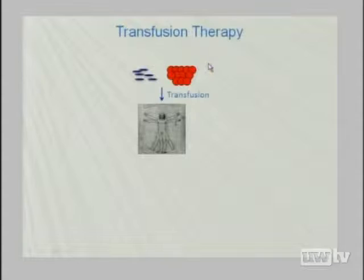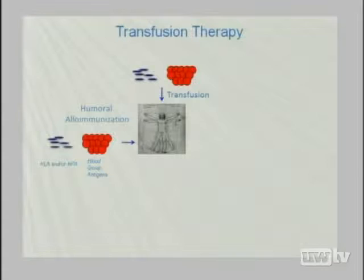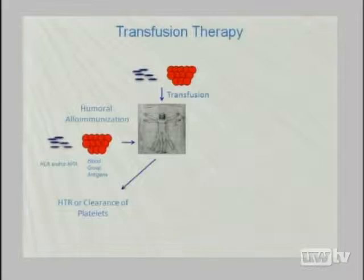The transfusion world has focused on these targets for antibody-mediated sequelae. Historically, the entire job of the immunohematology service is the process of humoral immunization, where antibodies against either platelets or red cells subsequently cause a problem. In the case of red cells, hemolytic transfusion reactions can be life-threatening when severe. In the case of platelets, you just don't get a bump in the platelet count, and this becomes a problem getting their numbers up.